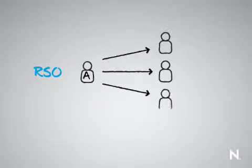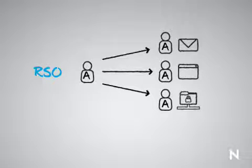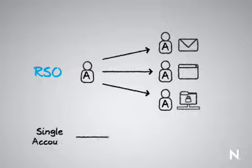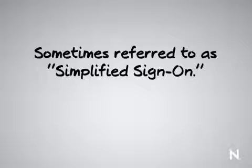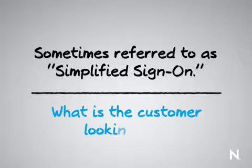The other type is reduced single sign-on, which is a little bit different. Reduced single sign-on means you have one user account with a particular ID — let's say it's A — and it's going to have the same ID in all other locations, whether they're email applications, web applications, or whatever they might be. All the different user information is the same: same credential for all these different sites. Why is it called reduced? Because you're not just logging in once, but you have a single set of credentials to access all that information. Sometimes this is referred to as simplified sign-on versus single sign-on. Get to know your customer — what they are looking for versus what we may think they need.